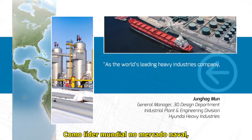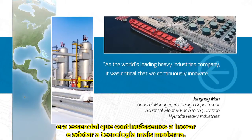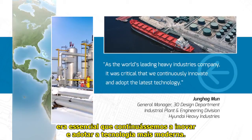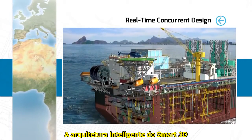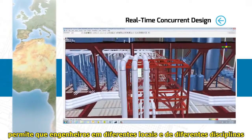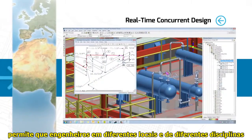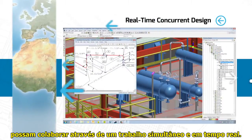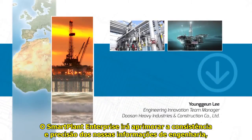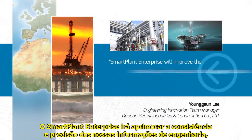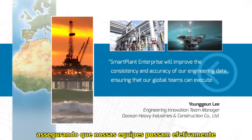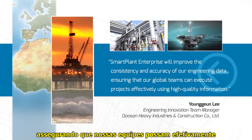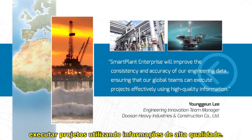As the world's leading heavy industries company, it was critical that we continuously innovate and adopt the latest technology. Smart 3D's modern architecture enables engineers in different locations and different disciplines to collaborate by working concurrently in near real time. Smart Plant Enterprise will improve the consistency and accuracy of our engineering data, ensuring that our global teams can execute projects effectively using high-quality information.